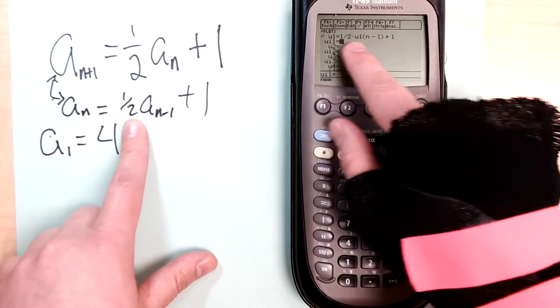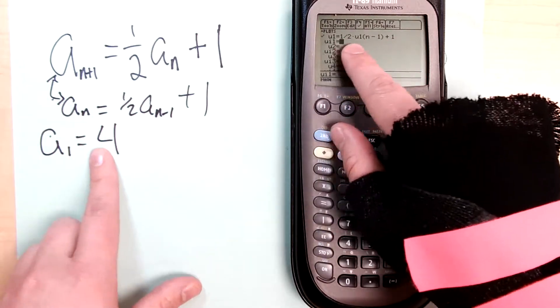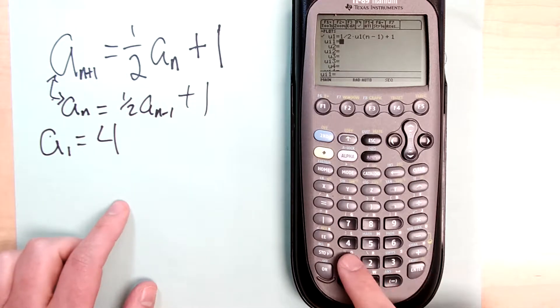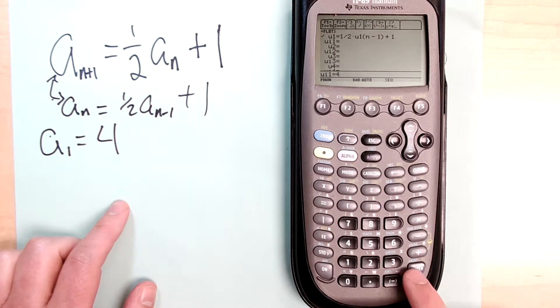And now I need to define the first value of the sequence, and since I only have one I can put in four.